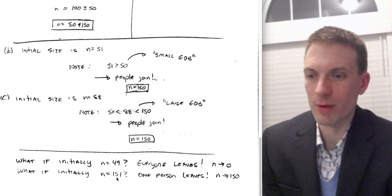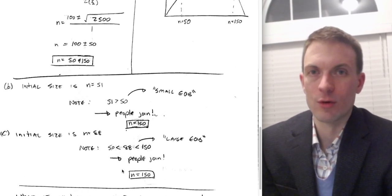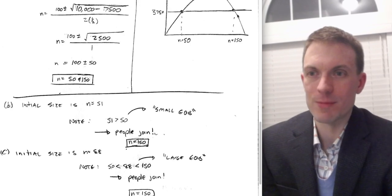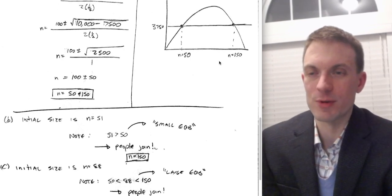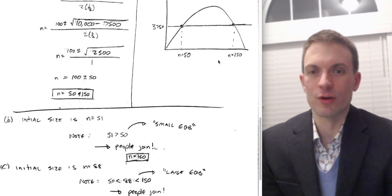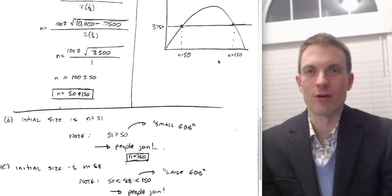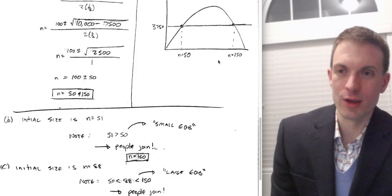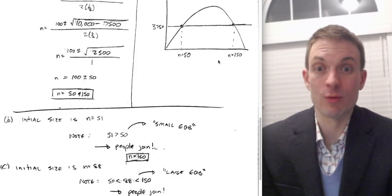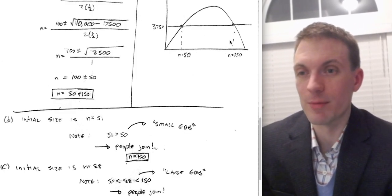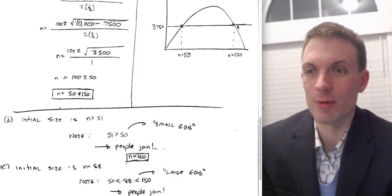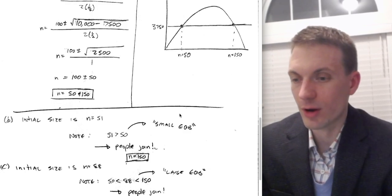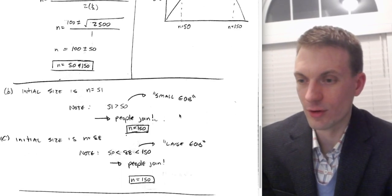What about 151 people? This is the situation where we've enrolled too many — like signing up a great-grandparent for Facebook who may not actually use it and eventually leaves. So the network settles back to 150.